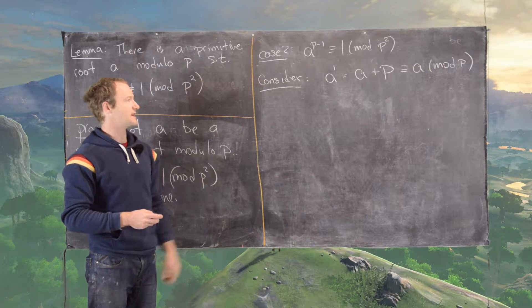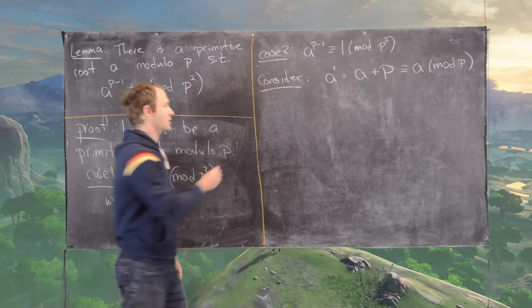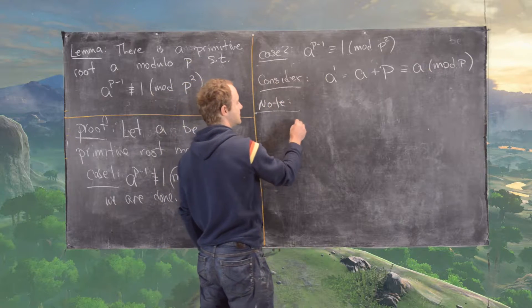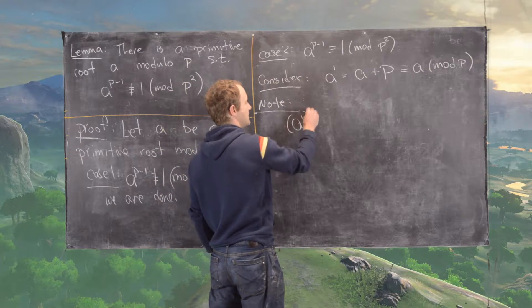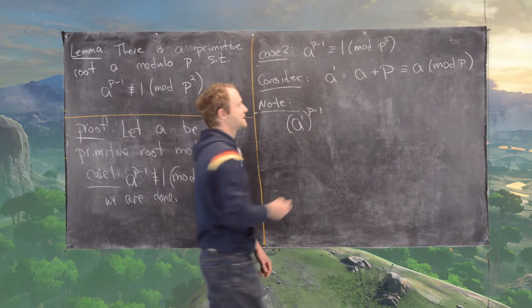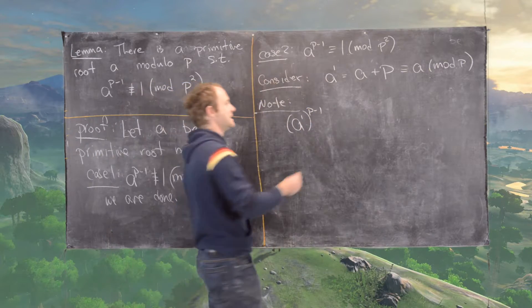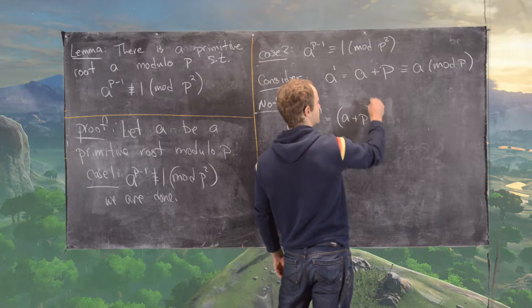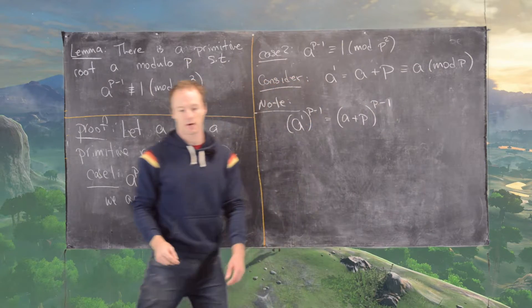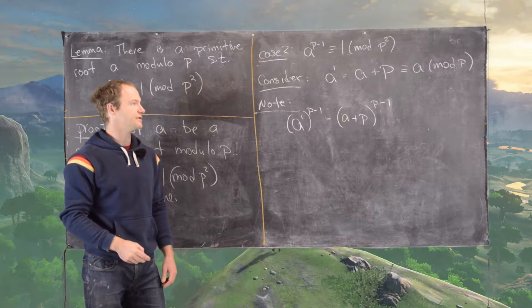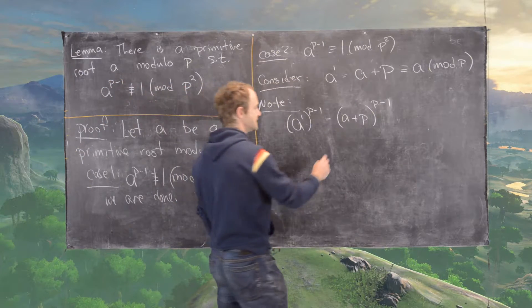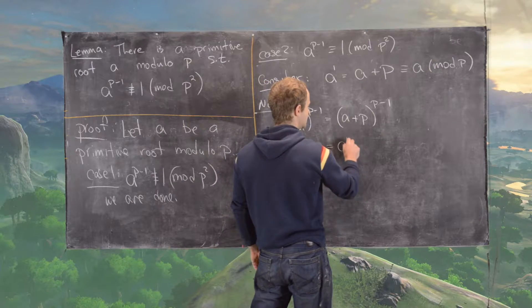And now what we want to show is that this new number a prime satisfies the conclusion of this lemma. So we want to take a prime to the p minus one power. Let's notice the following calculation: if we take a prime to the p minus one power, that's the same thing as taking a plus p to the p minus one power. And now we can use binomial expansion theorem to tell us that this is equal to a to the p minus one power